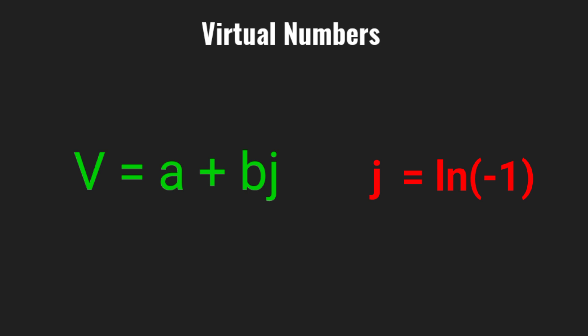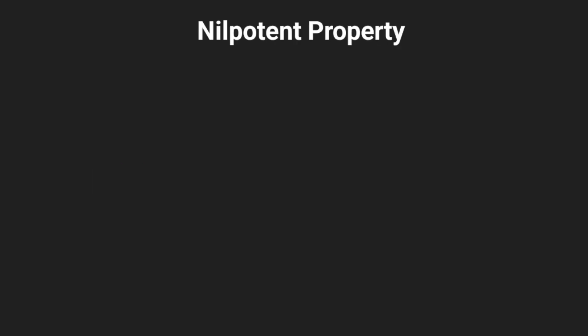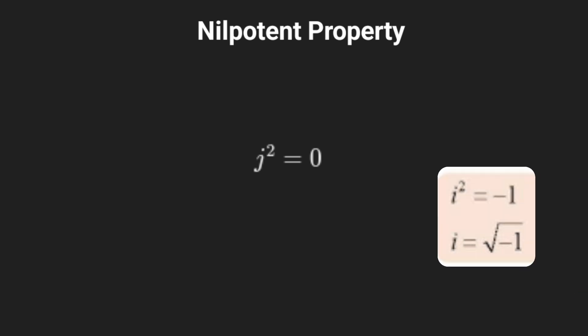Let's break this down step by step. First, the key property of j. When you multiply j by itself, the result is zero. This property is called nilpotent. It makes j fundamentally different from i, where multiplying i by itself gives negative one.